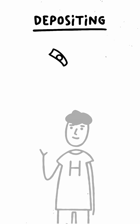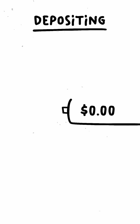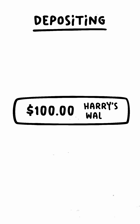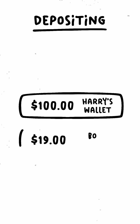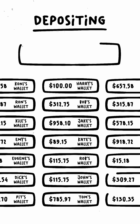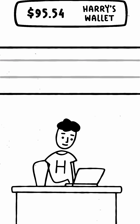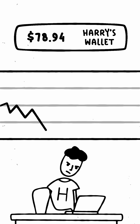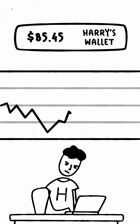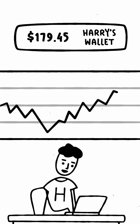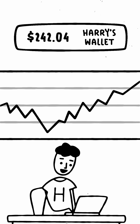Next, Harry deposits funds. CEXs function similarly to banks. Once he makes a deposit, it's sent to a secure cold wallet, while a digital record of his balance is created in the exchange's internal database. When Harry trades, his balance changes in the database, reflecting how many coins stored in the CEX's cold wallet now belong to him.